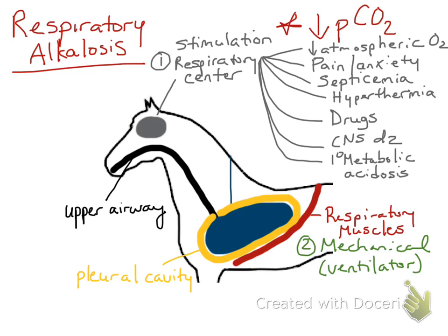The patient is hooked up to a ventilator — the machine is breathing for them at an increased rate. So those are the two big broad categories: stimulation of the respiratory center by various etiologies, and mechanical hyperventilation where the machine is driving the breathing.